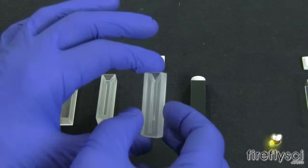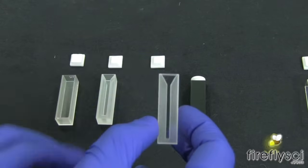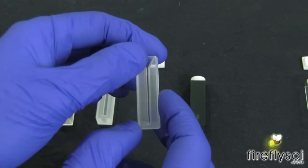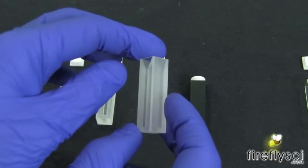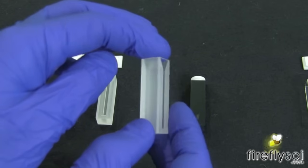So this is our micro cell. This is called type 18 with an inside width of 2mm. The capacity on this guy is 0.7 milliliters. So again you're getting a 10mm light path with a smaller capacity.